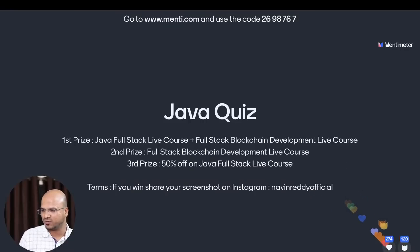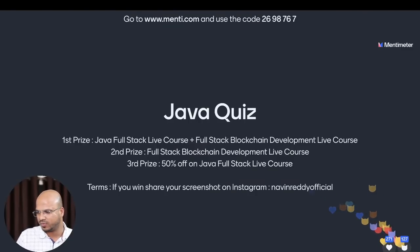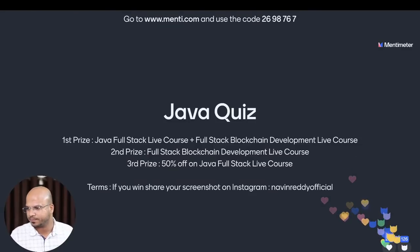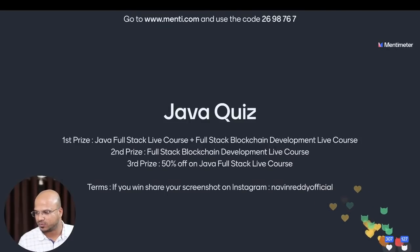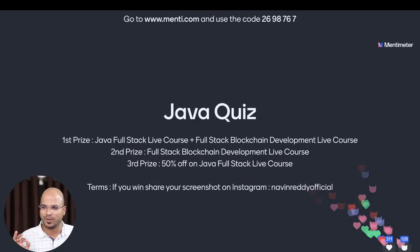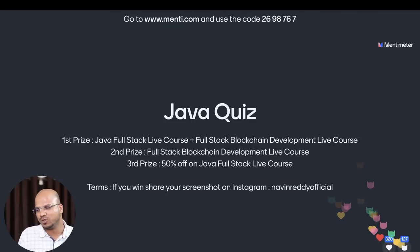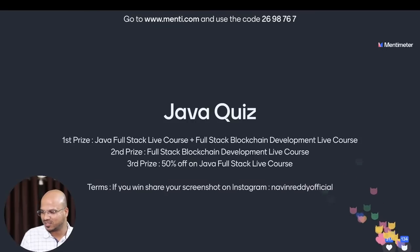Regarding the last date to enroll — for Java we have limited seats, and registration will close whenever the batch is full. For blockchain, the enrollment just started so you can join anytime. The first prize winner gets access to both courses. The blockchain course is six months live. There is no prerequisite for the blockchain course — we are going to start from the base. Even if you don't know anything about web development, you will learn HTML, CSS, and JavaScript in the batch itself.